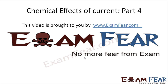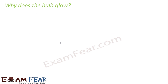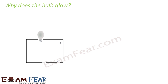Hello friends, this video on chemical effects of current part 4 is brought to you by examfear.com — no more fear from exams. So now the question is: why does the bulb glow? We know that when electric current flows through a complete circuit, the bulb will glow, but what exactly happens that makes the current flow cause the bulb to glow?